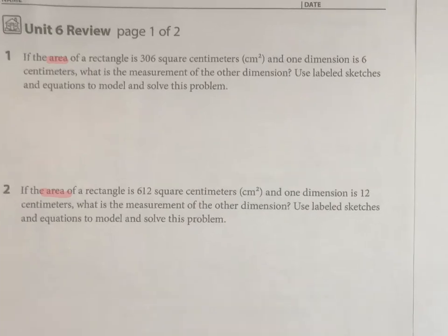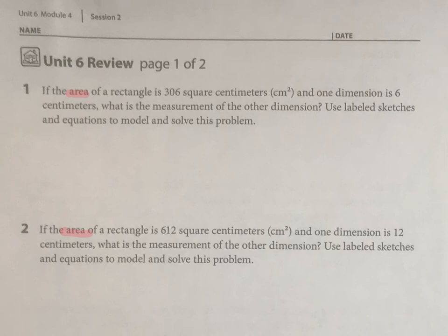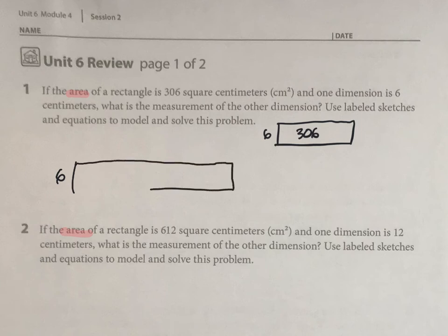Let's start with number one. So we've got an area of 306 square centimeters and one dimension is 6 centimeters. So the whole thing might look like that, but I will probably want to break it into smaller rectangles to figure out how it is. So I will start here.